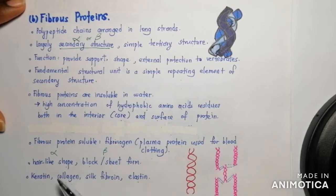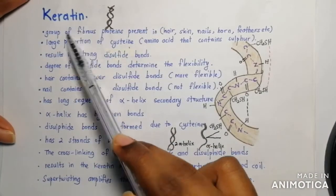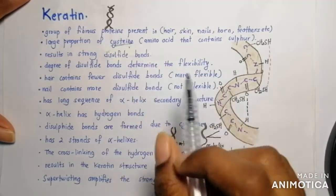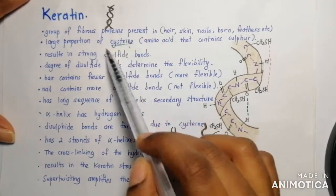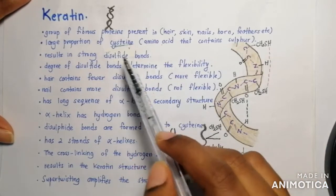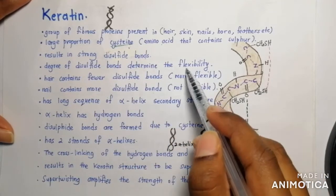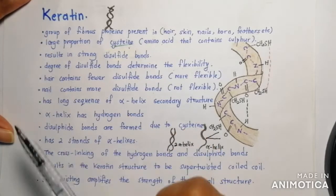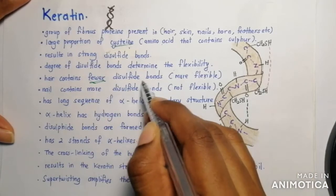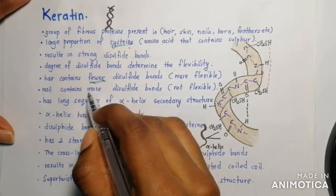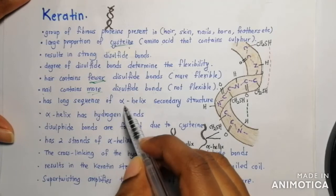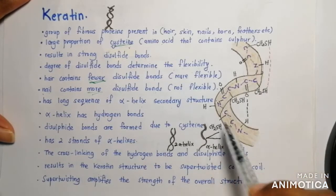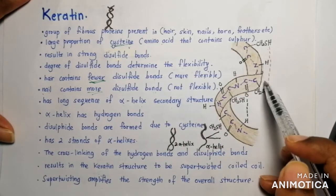Keratin is a group of fibrous proteins present in hair, skin, nails, horns, or feathers. The amino acid of keratin has a large proportion of cysteine, which contains sulfur, therefore keratin has disulfide bonds. The degree of disulfide bonds determines the flexibility of the keratin — hair is more flexible because it has fewer disulfide bonds, whereas nails are not flexible because they have more disulfide bonds. Keratin has a long sequence of alpha helix secondary structure, with hydrogen bonds forming the helix and disulfide bonds from the sulfur-containing cysteine.